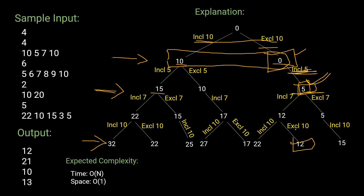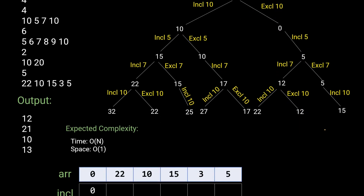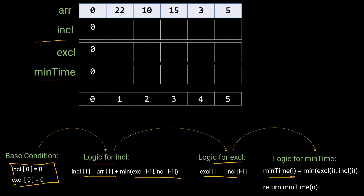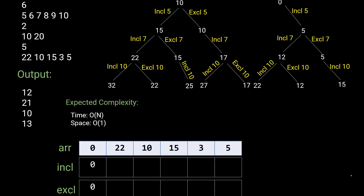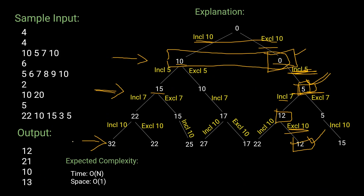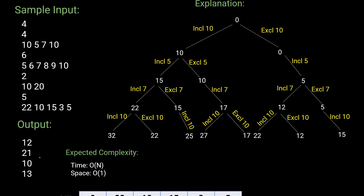The logic for the exclude table is: exclude[i] = include[i-1]. For example, exclude[10] = include[7] = 12. To find the minimum time at each step: min_time[i] = min(exclude[i], include[i]). At the last level, after encountering all elements, min_time = min(include[last], exclude[last]) = 12. This matches the expected output of 12 for the first sample.